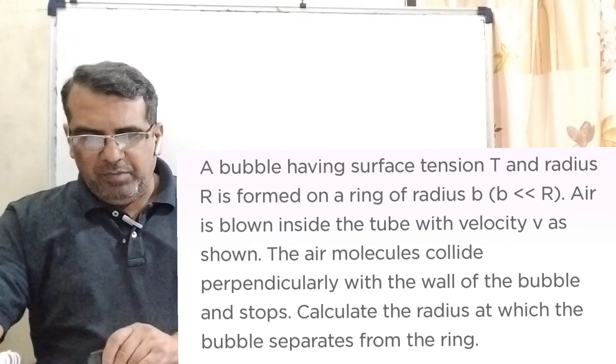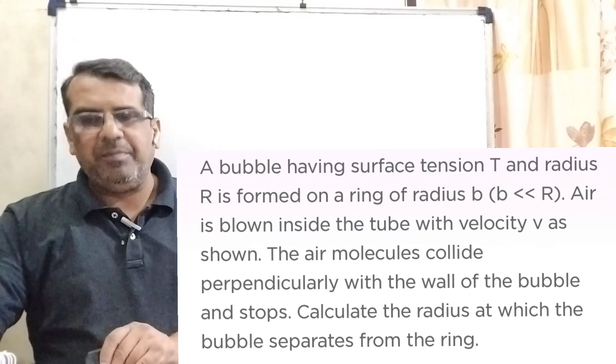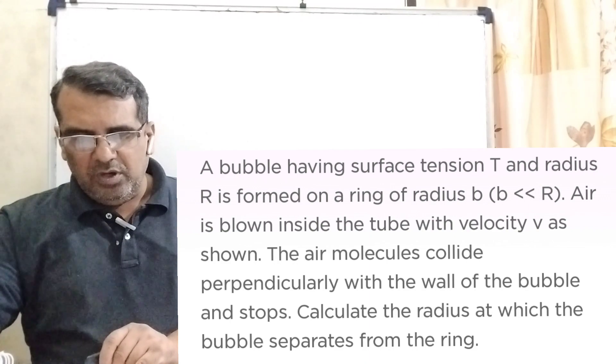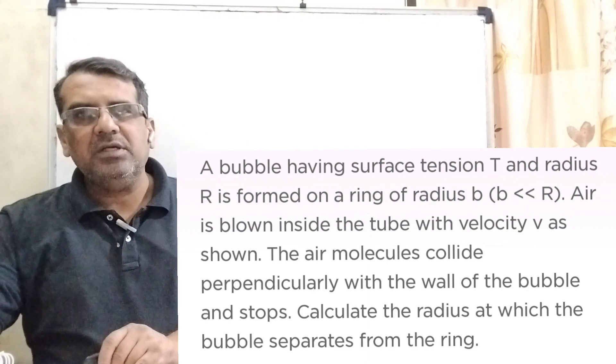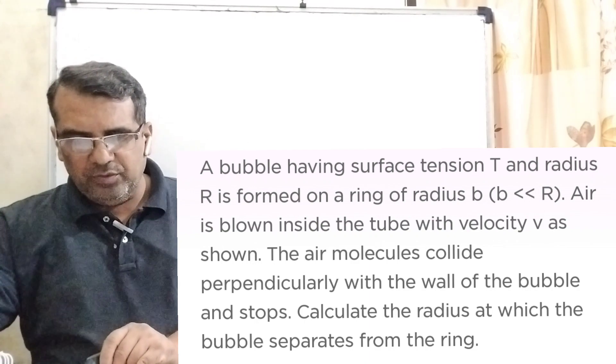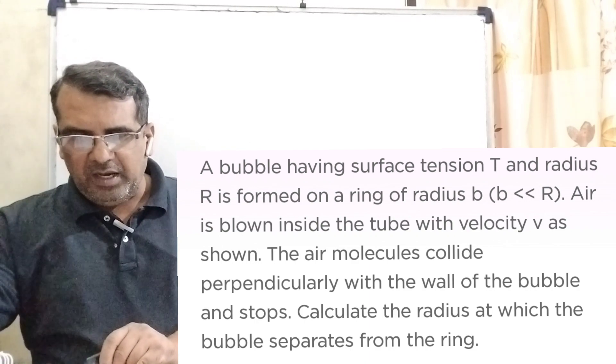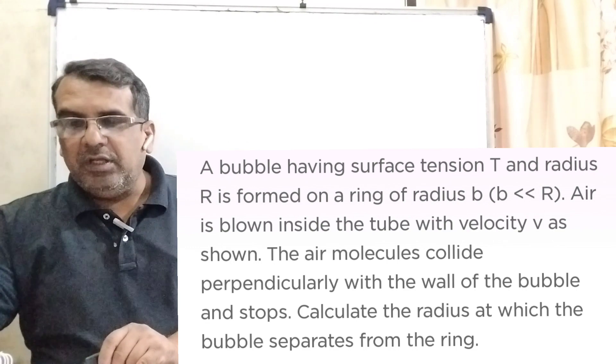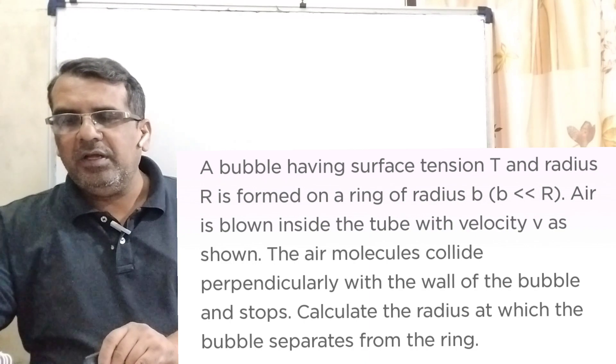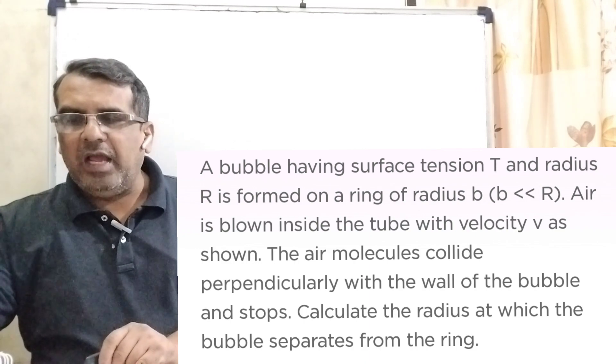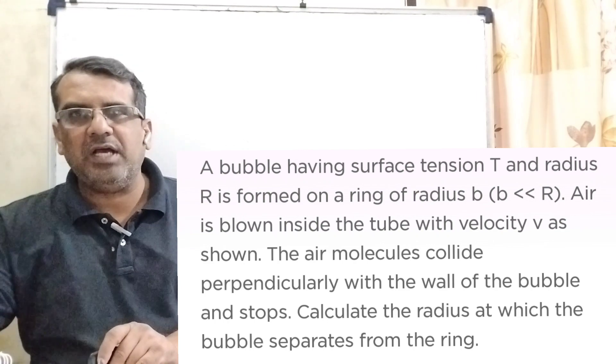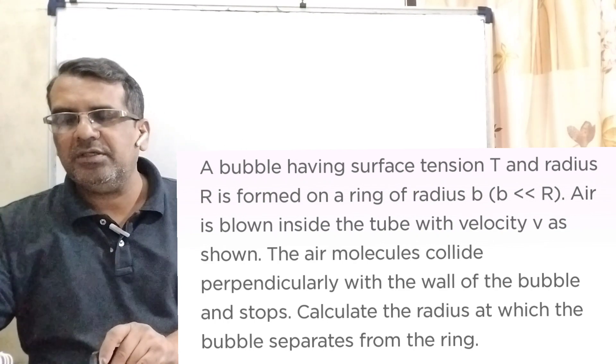Now here is the question. A bubble having surface tension capital T and radius capital R is formed on a ring of radius small b, where b is much less than capital R. Air is blown inside the tube with velocity v. As shown, the air molecules collide perpendicularly with the wall of the bubble and stop. Calculate the radius at which the bubble separates from the ring. This question is from JEE Advanced 2003.